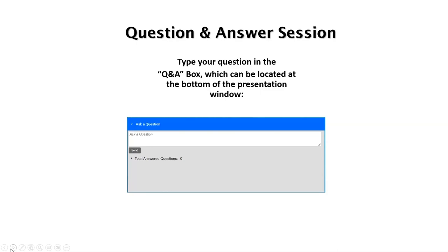The first question: can sterile filters remove or reduce beta-glucans? The answer is no. As mentioned, beta-glucan sizes are diverse, ranging from 1 to 10,000 kDa. Beta-glucans are smaller than 0.2 micrometer filters, so even viral filters cannot remove beta-glucans.